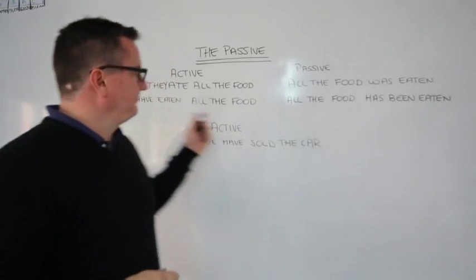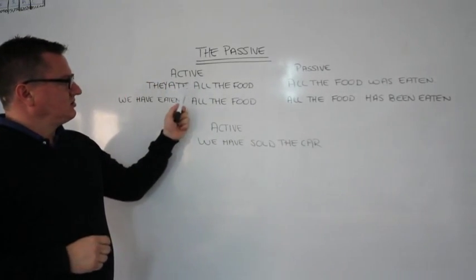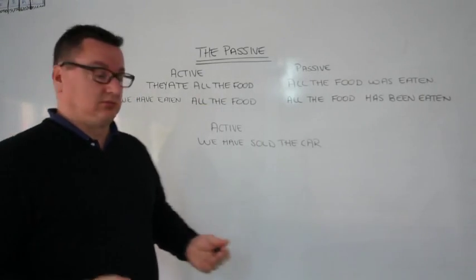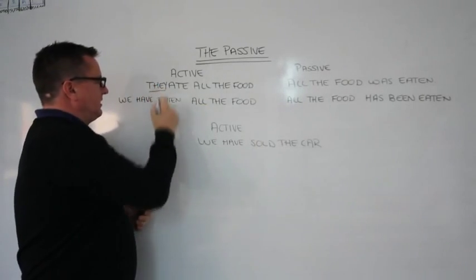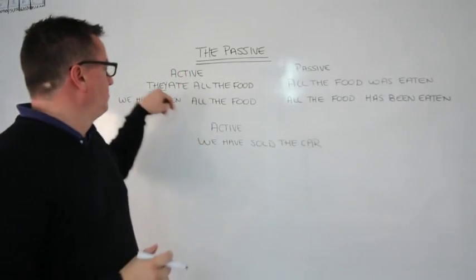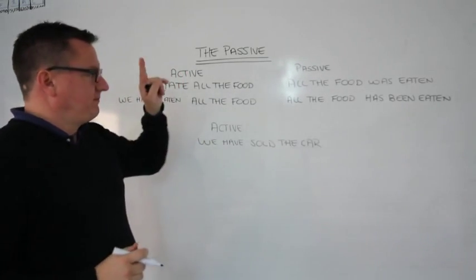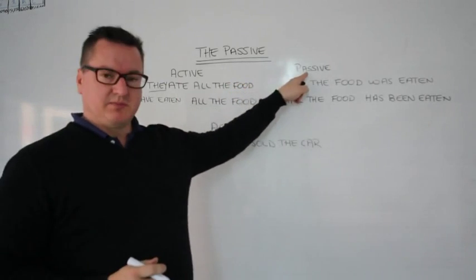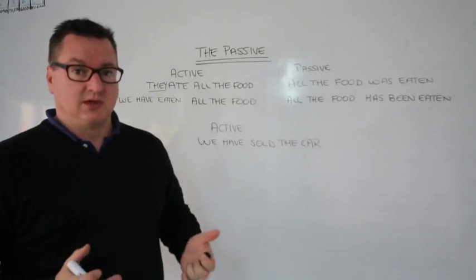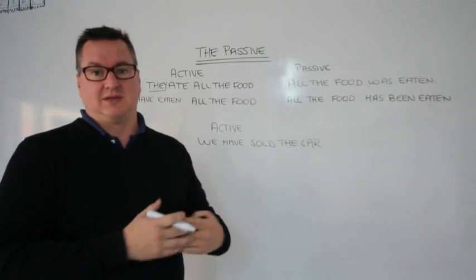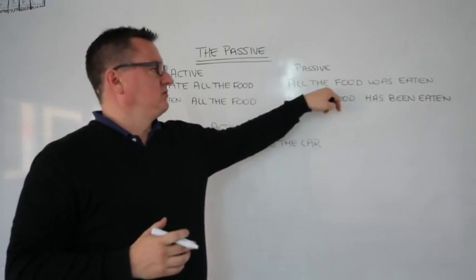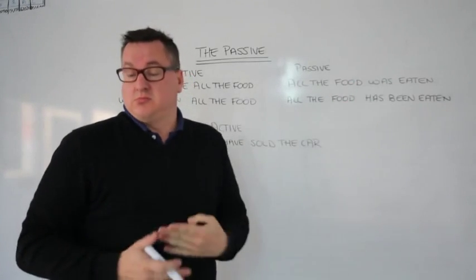For example: 'They ate all the food.' Who ate the food? Well, they did — the people. The people ate all the food. But when you are referring to the passive, it is not important who ate the food. It is important that the food was eaten — as in 'All the food was eaten.' By whom? Not important.